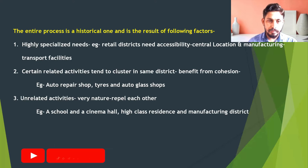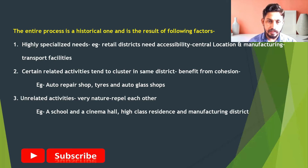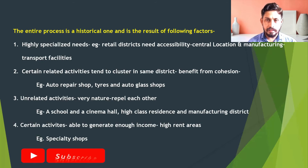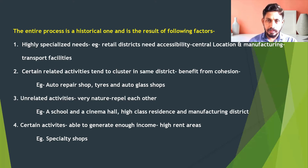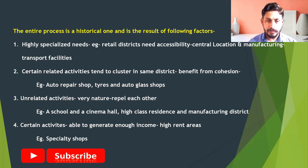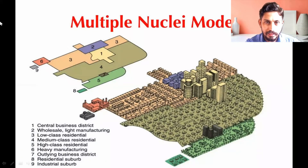High-class residents and manufacturing districts also repel each other, forming two different nuclei. Additionally, certain activities like high-class business activity are able to generate enough income, and that's why they concentrate in higher-end areas, creating new higher-end areas and different nuclei — for example, specialty shops.